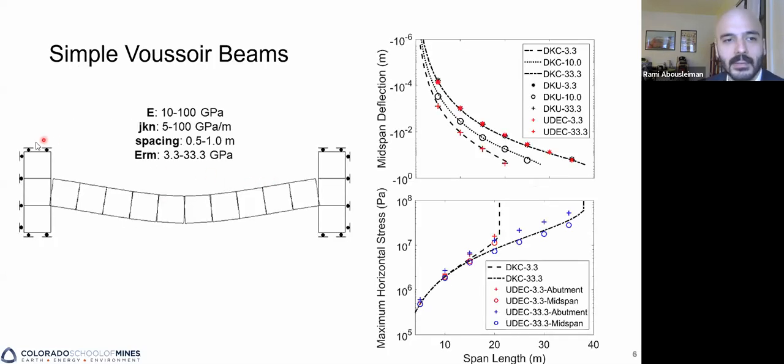So these are the results of our preliminary Voussoir beam models. We can see mid-span deflection here on the top and maximum horizontal stress here on the bottom. Two important things to note were that our models match previous models, which is great. Our models are shown in red and the previous models are shown in black from Diederichs and Kaiser 1999, as well as the analytical solution shown by the black lines.